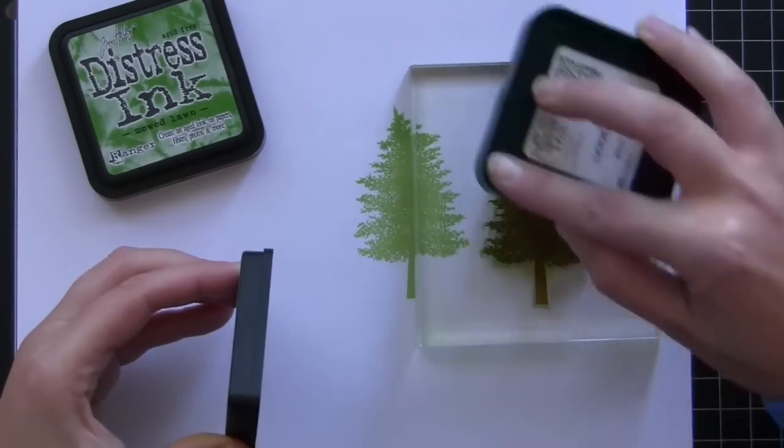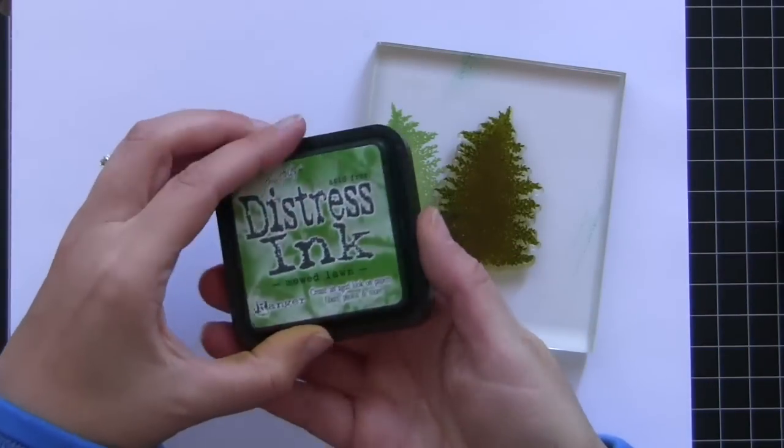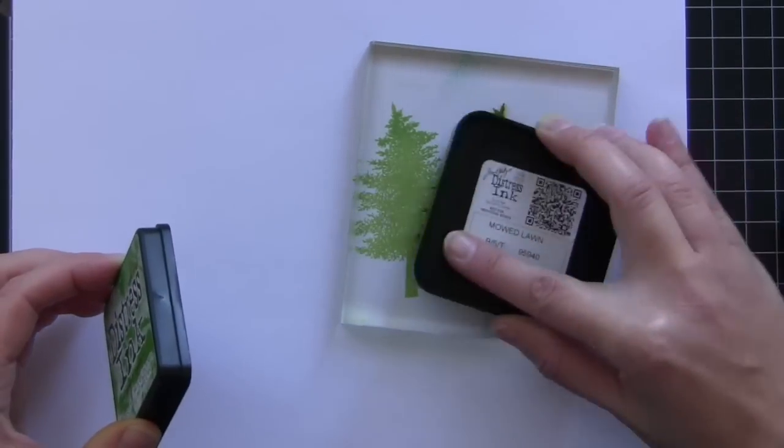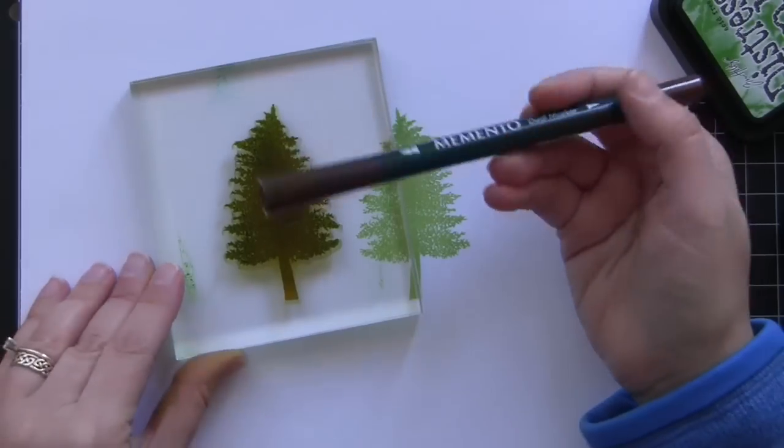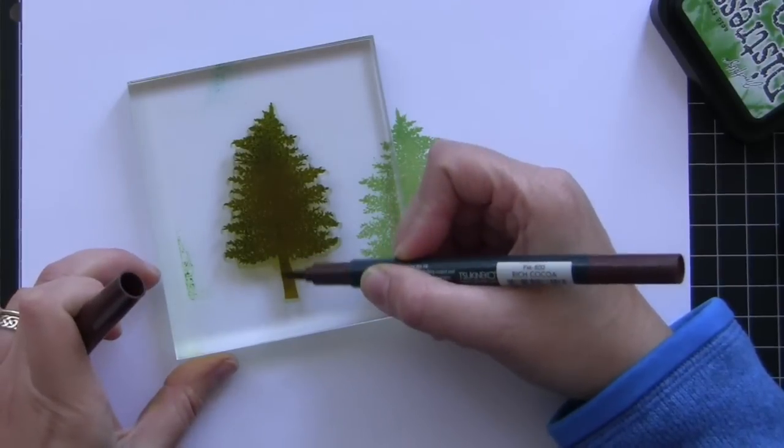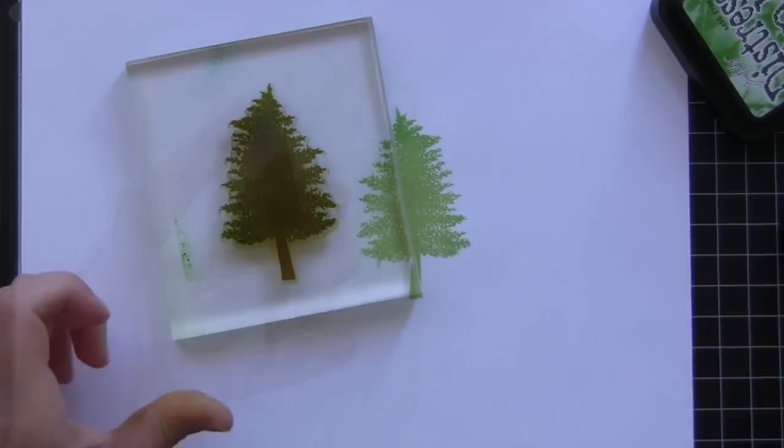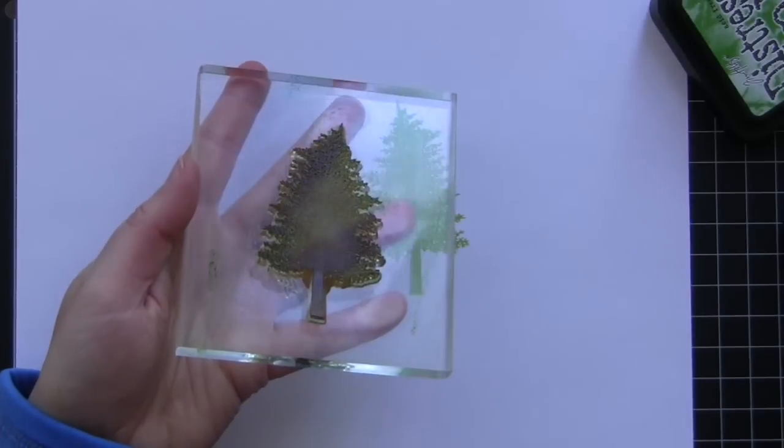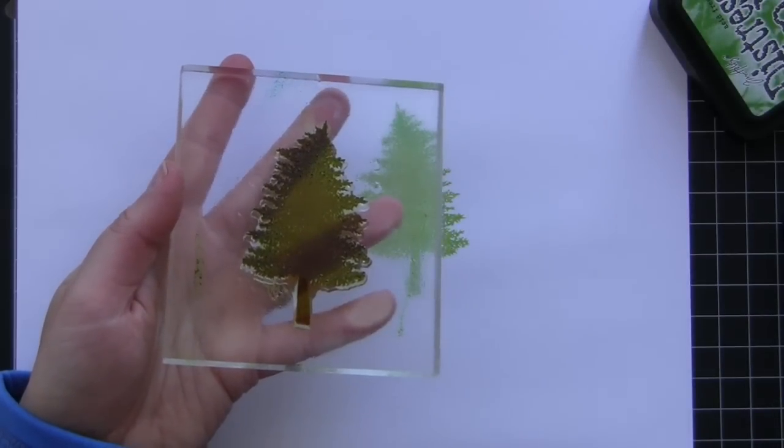So for this technique I'm going to be using two colors and starting with the lightest one first. This is evergreen bough. Then I'm going to take a darker green, this one's called mowed lawn, and I'm going to put it right over top. Next I'm going to take a brown water-based marker, this one is Memento, but you can use the coordinating distress markers too, just so long as it's water-based.